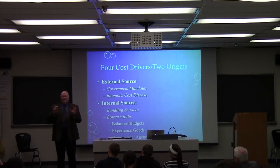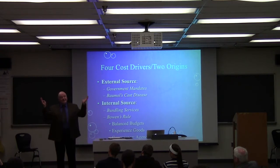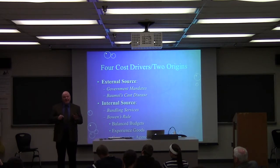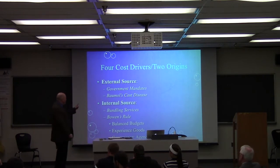In higher education, we bundle a lot of stuff together — progressively more stuff together. But what's happening with costs? The cost has been going up very rapidly. So it would be very easy for the Justice Department to make an antitrust case against higher education based upon that cost history and the frequency of bundling things together.